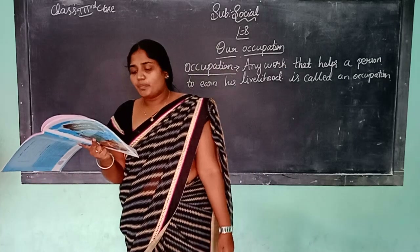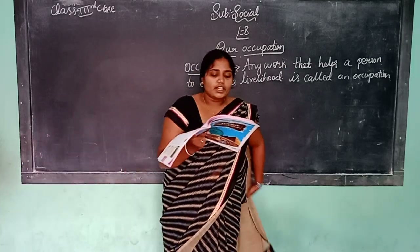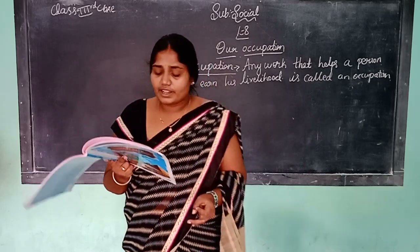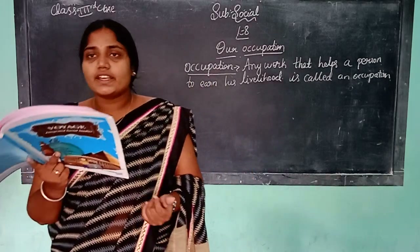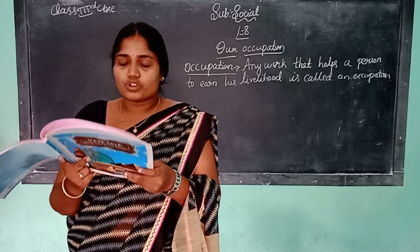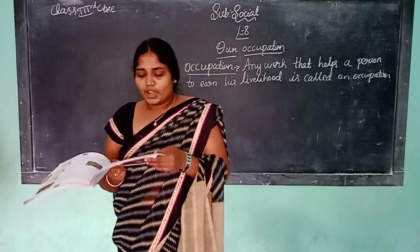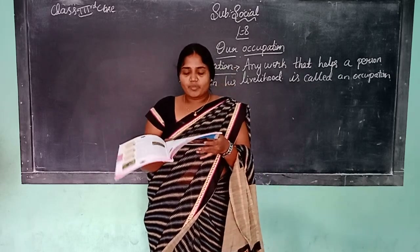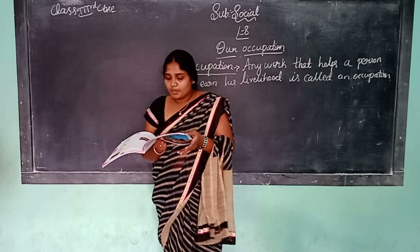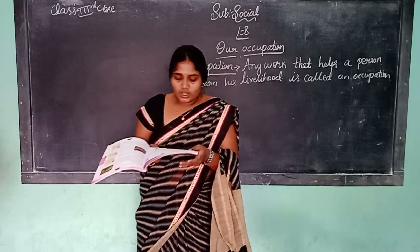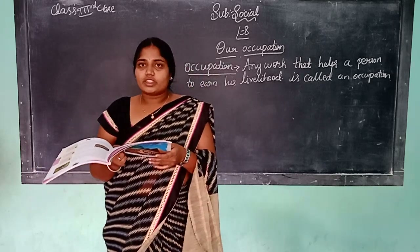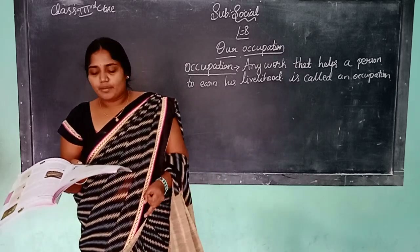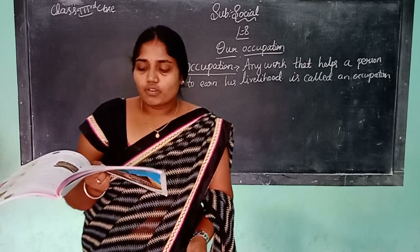Farming is the main occupation of people in India. Farmers grow crops like rice, wheat, pulses, vegetables and fruits. The crops grown depend on the soil, fertility of the soil, climate and availability of water.